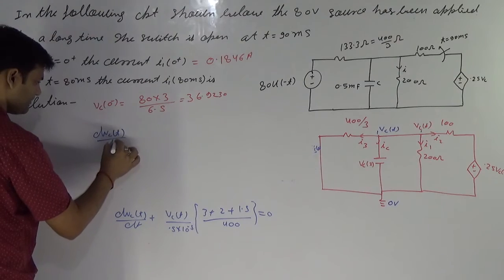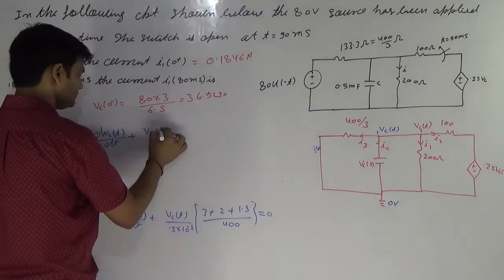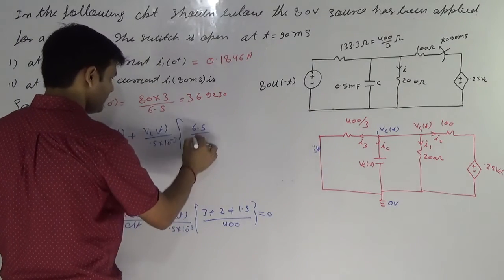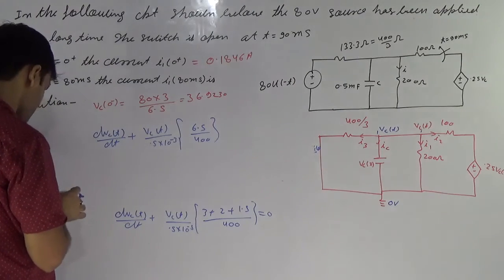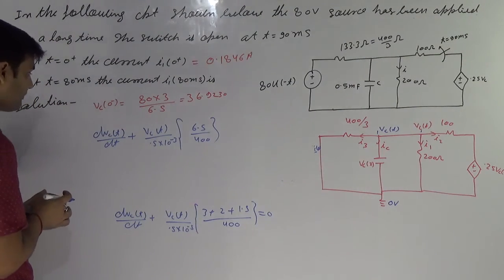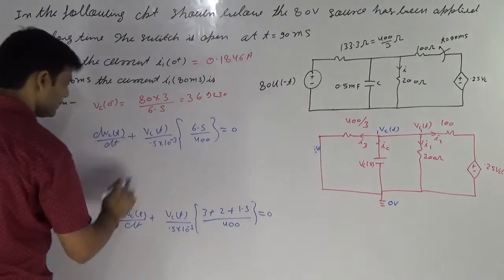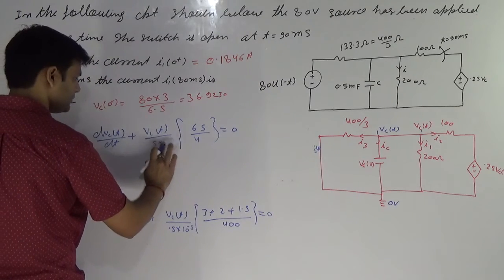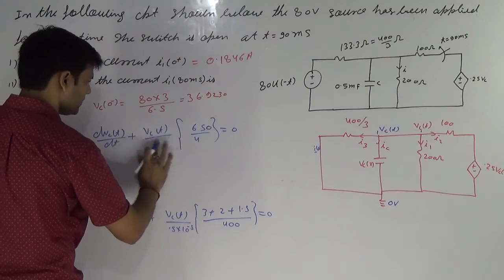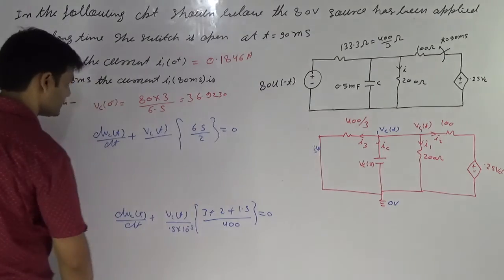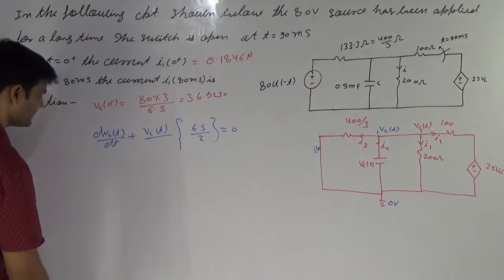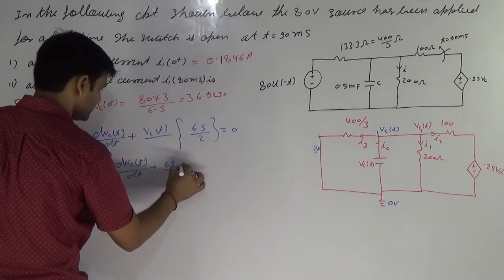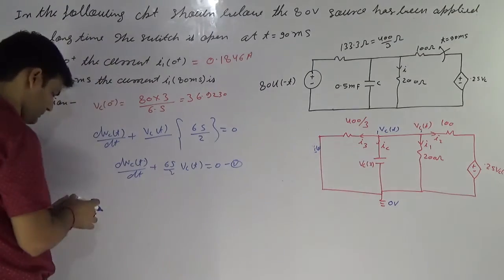dVCT/dt plus [divided by 0.5 into 10 to the power minus 3] — this is 6.5 upon 400. 0.5 cancels out — this is minus 1. Finally we got 65 by 2. The dVCT/dT plus 65 by 2 into VCT — this is equation number one.